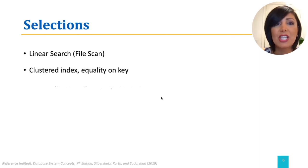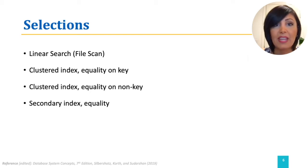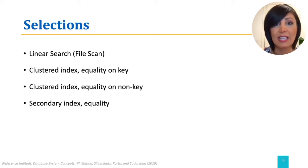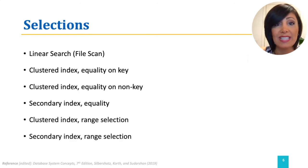Another way of performing a selection is using an index to retrieve a single record, or a very small number of records that satisfy an equality condition. The index specifies the record, and the specific record is retrieved from the file. We can also use secondary indexes for equality selections with conditions on key or non-key attributes. While equality selection is fairly similar for clustered and unclustered indexes, range selections are not very efficient using secondary indexes. For a detailed review, refer to videos 3.3 to 3.7 in the previous module.